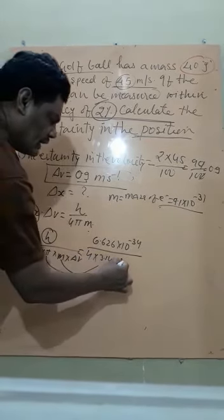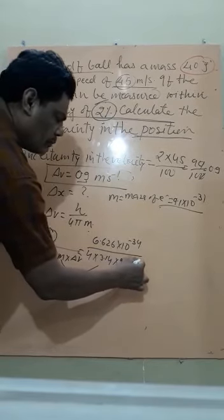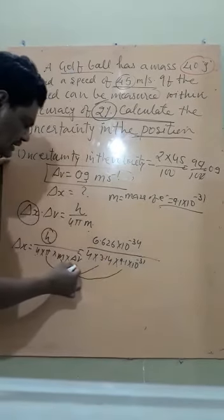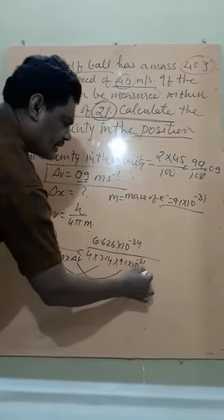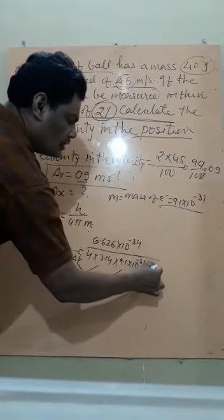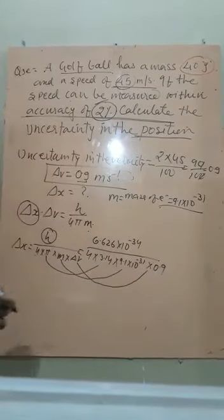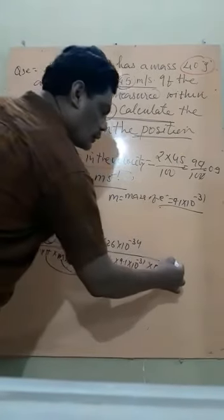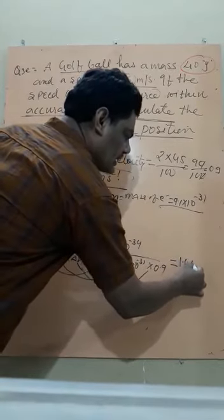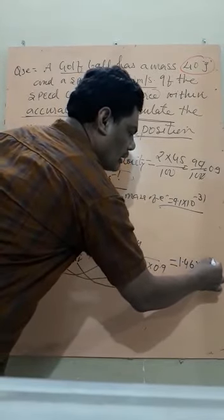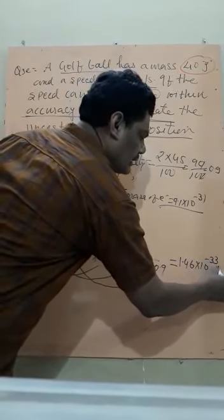It is 9.1 into 10 to the power minus 31. Now the value of del V, that is uncertainty, is equal to 0.9. When you solve the question, its answer comes 1.46 into 10 to the power minus 33 meter. This is the uncertainty in the position.